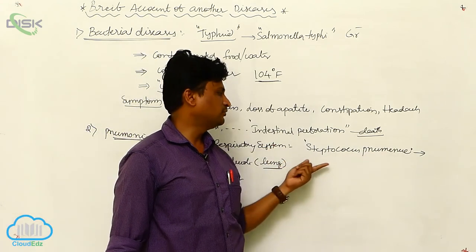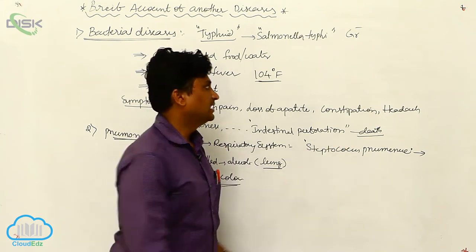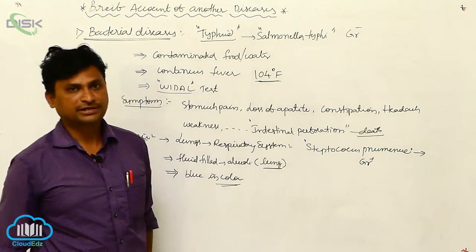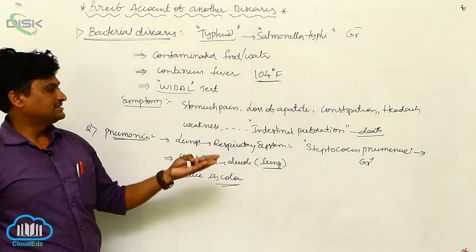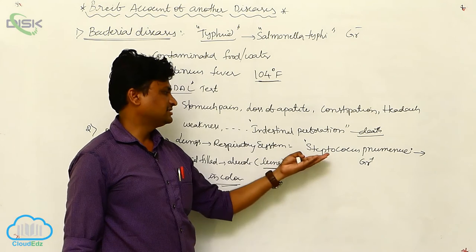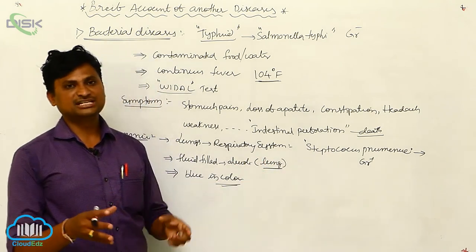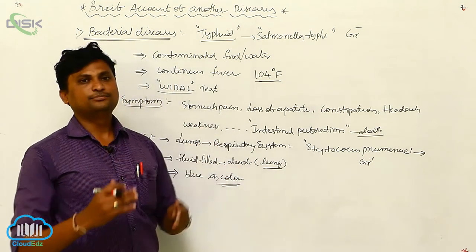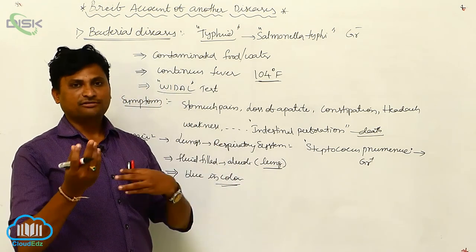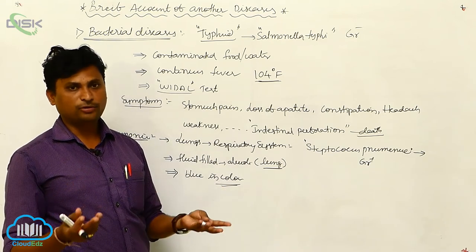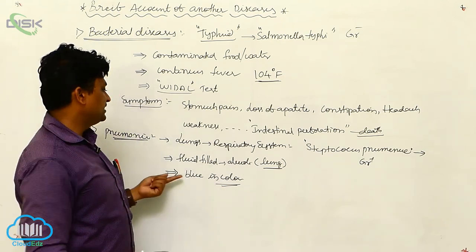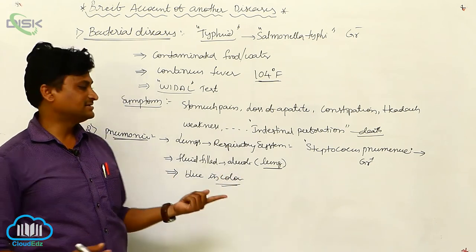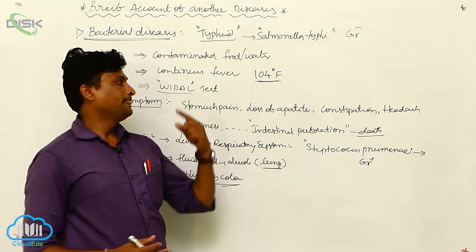Streptococcus pneumoniae and Haemophilus influenzae are gram-positive bacteria. When infected, inflammation takes place in the alveoli with fluid deposition in the lungs, causing problems with gas transportation. Since proper oxygen is not supplied to all parts of the body, the body turns blue in color.